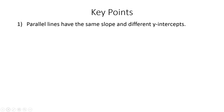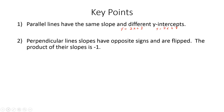The first key point is that parallel lines have the same slope with different y-intercepts. An example of a pair of equations that are parallel would be y equals 2x plus 3 and y equals 2x plus 8. The slope for each one of those lines is 2, in y equals mx plus b form, and since those equations have the same slopes, the lines are parallel.